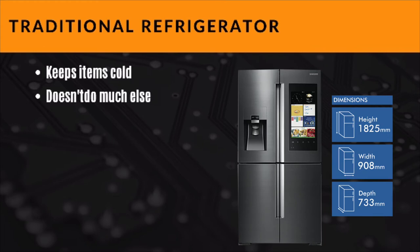A traditional refrigerator just keeps items cold — it doesn't do much else. It's a non-Internet of Things device. You put food in it and it has a very simple interface. Everybody knows how to use it, and decades ago it was the same interface. A hundred years ago, you had a refrigerator that looked basically the same thing.